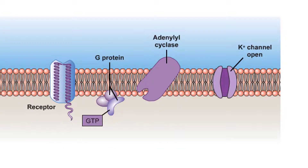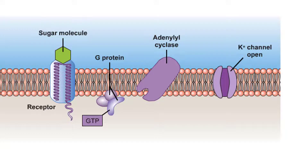Let's now look at the chemical basis of taste. How does tasting occur at the molecular level? It is similar to smell. The microvilli endings of the taste receptor neuron are bathed in saliva. A food molecule called a tastant, such as glucose, binds to receptor proteins found in the plasma membrane of taste receptor cells.